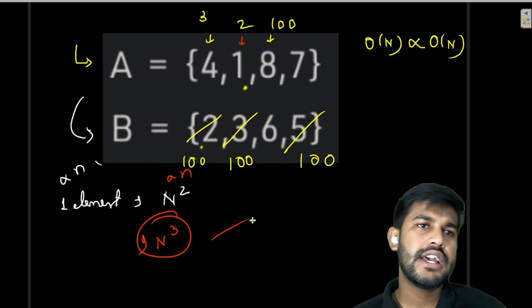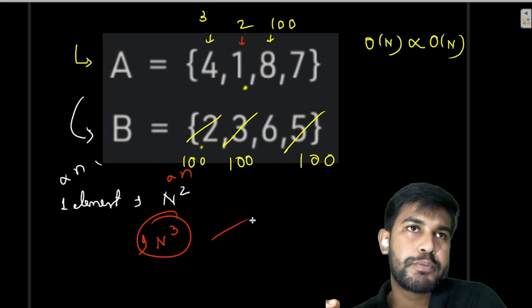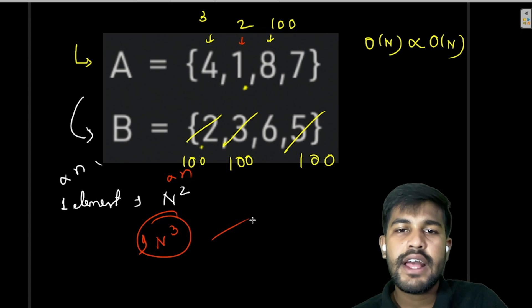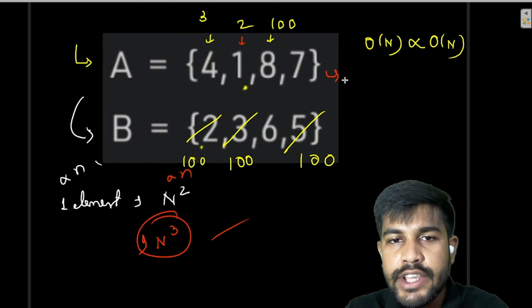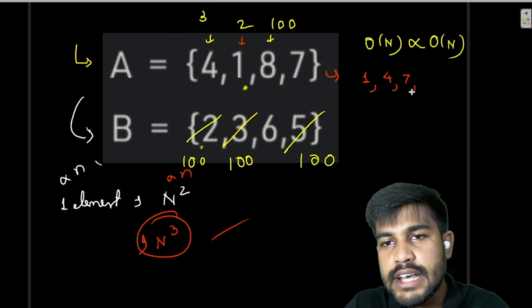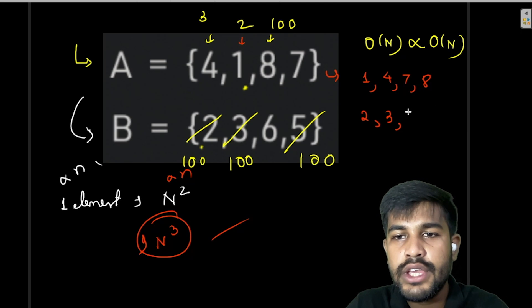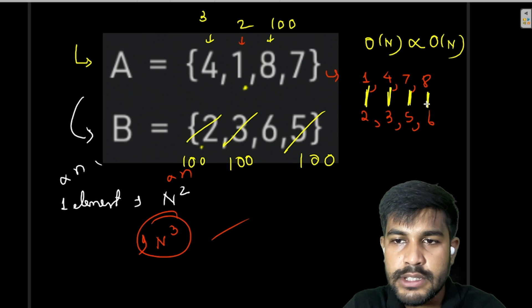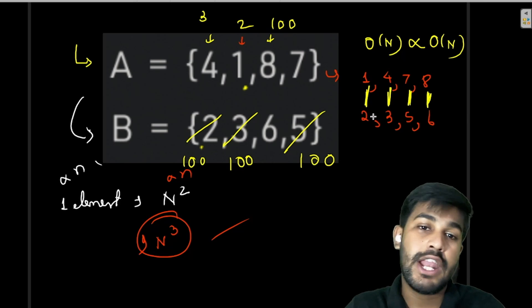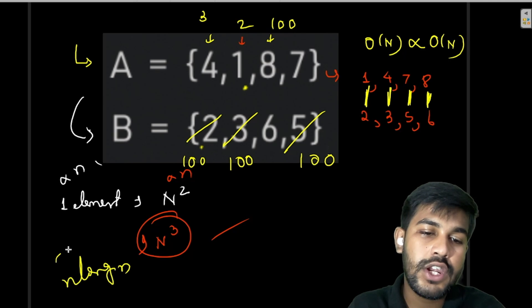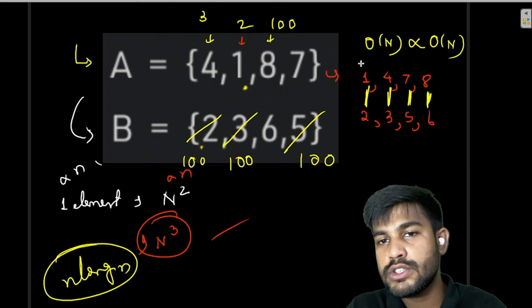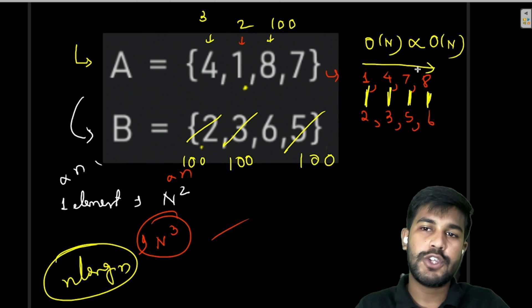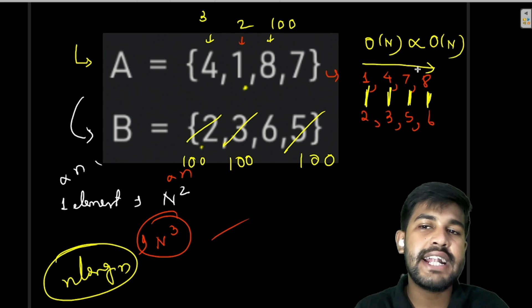The better solution is simply to sort both arrays. Sort A to get 1, 4, 7, 8 and sort B to get 2, 3, 5, 6. Then pair elements at matching indices: first with first, second with second, and so on. Sorting has a time complexity of O(N log N), which is completely feasible and much better than the naive approach. After sorting both arrays, we traverse from index 0 to N and pair up the values.